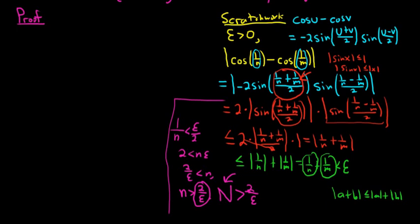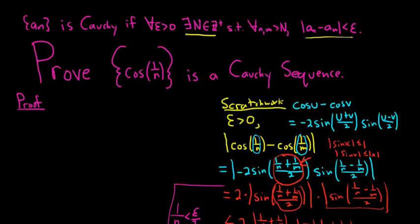All right, let's go back and do our proof. Fun stuff. So we start our proof by letting epsilon be greater than 0. And now by the Archimedean property, we're going to choose a natural number, or a positive integer, greater than 2 over epsilon. So we're using the Archimedean property to choose this number.